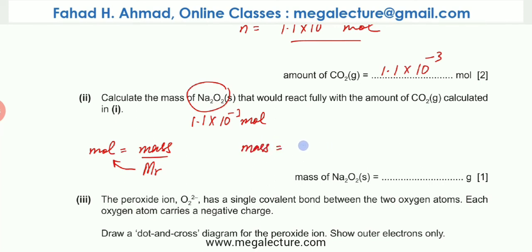Mass would be moles, 1.1 × 10⁻³ multiplied by the Mr which is going to be 2 sodiums and 2 oxygens. That's 23 × 2 + 16 × 2. That would be the Mr. The answer we're getting is 0.0860 grams. That would be the mass of Na2O2.